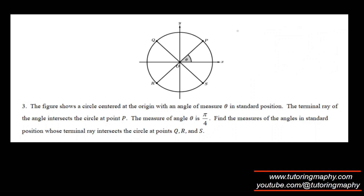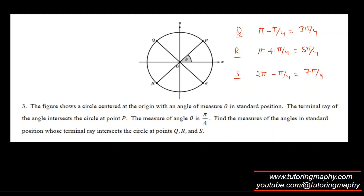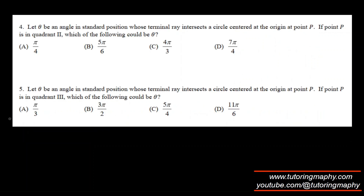Likewise for the next set — it's just a different number, same concept. For Q it will be π minus π/4 which is 3π/4. For R it is π plus π/4 which is 5π/4. And for S it is 2π minus π/4 which is 7π/4.